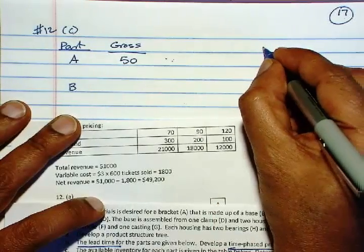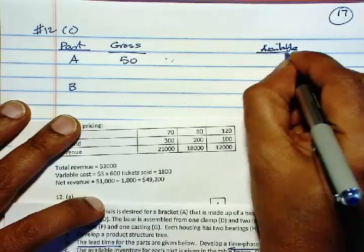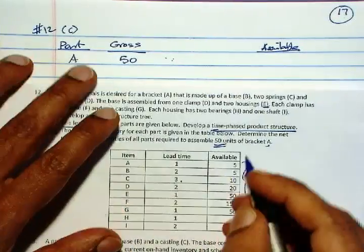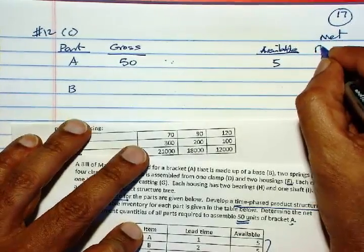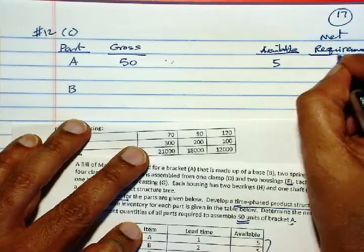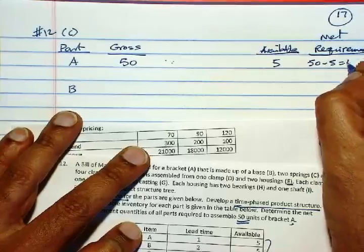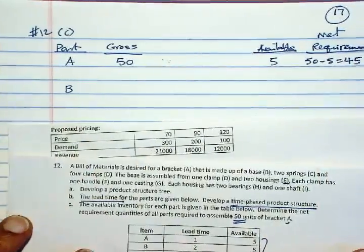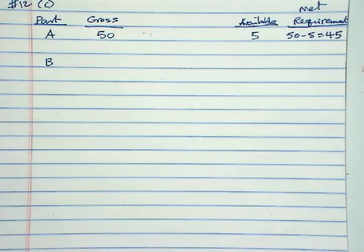So, how many units are already available on hand? There are 5 units available on hand. So the net requirement is 50 minus 5 is 45. We need 45 more units of A.